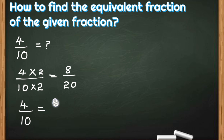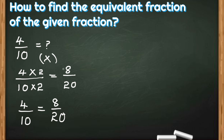Instead of 2, you can also take 3, 4, or any other number for multiplication, but remember to multiply both the numerator and denominator by the same number. This is how we find equivalent fractions using the multiplication method.